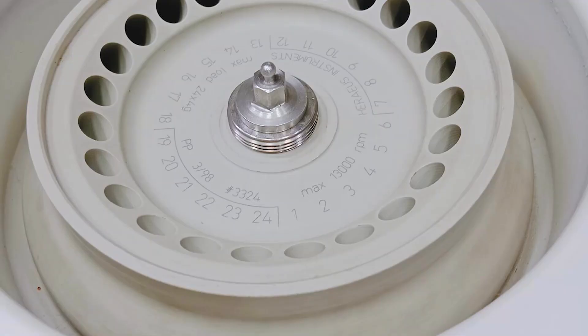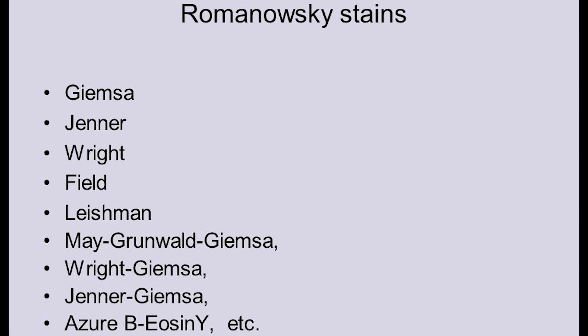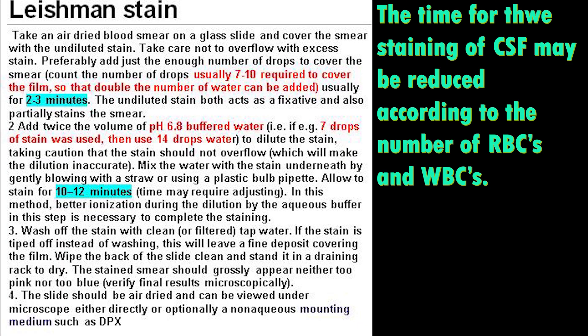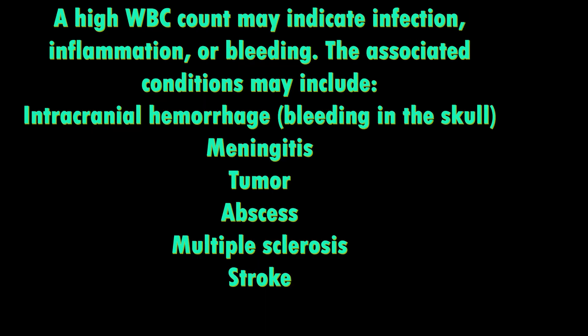Normal CSF contains fewer than 5 cells per cubic millimeter, predominantly lymphocytes. When the cell count is more than 5, a differential count is needed. Centrifuge the sample at low speed — below 1000 rpm — for two to three minutes, then make a smear from the deposit. Increased speed and time can damage cell morphology.